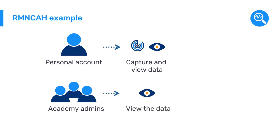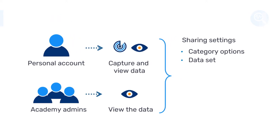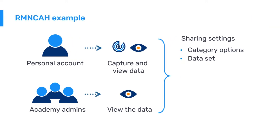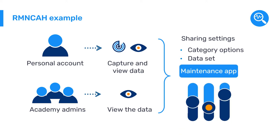To do this, we will need to set the sharing settings for each of our individual category options as well as for our dataset. Let's see how we can do this by applying sharing settings to the category options and dataset in the maintenance app.